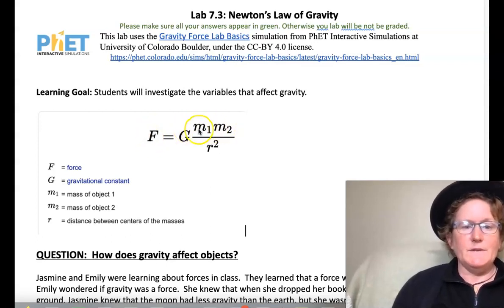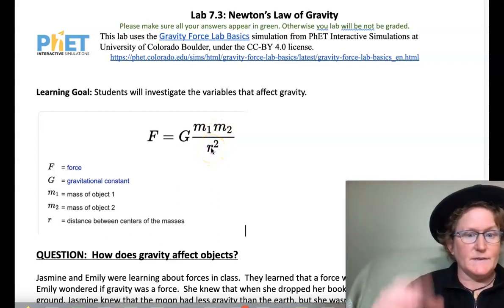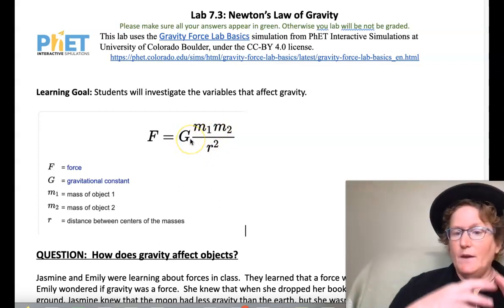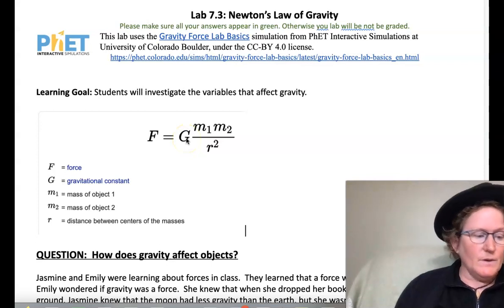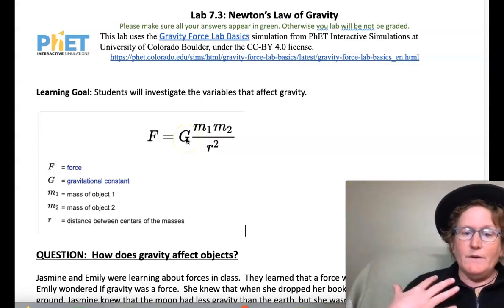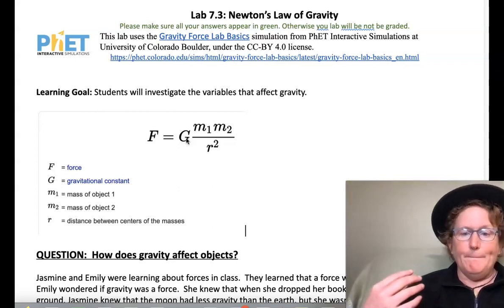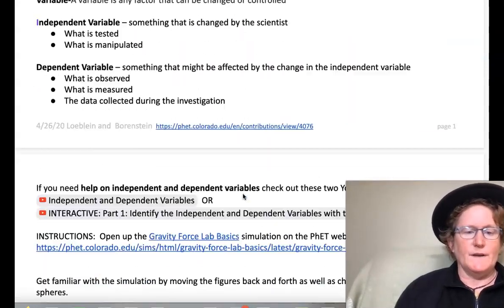It's multiplying the two masses. It's dividing by the square of the distance between the masses. And then it's multiplying that whole calculation by the gravitational constant, which is a tiny number because we know the gravity we exert on objects is rather small compared to the gravity we feel from planet Earth exerting a force on us.